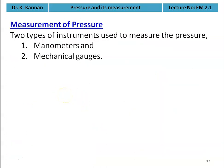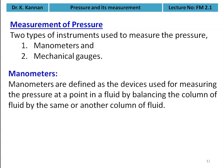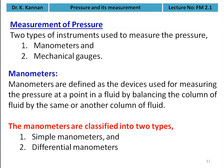There are two types of instruments used to measure pressure: manometers and mechanical gauges. Manometers are devices used for measuring pressure at a point in a fluid by balancing a column of fluid against the same or another column of fluid. There are two types: simple manometers and differential manometers.